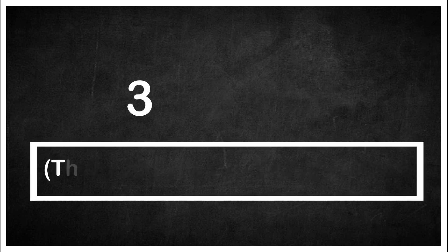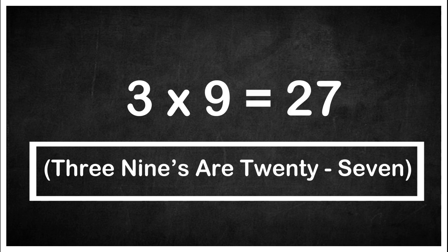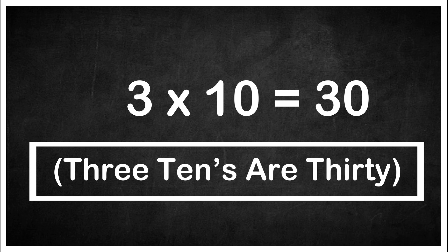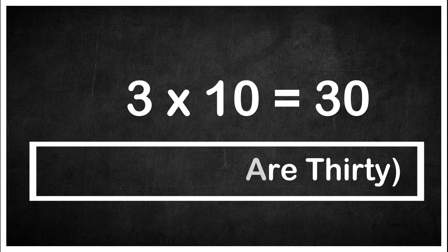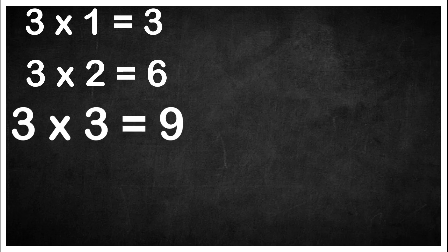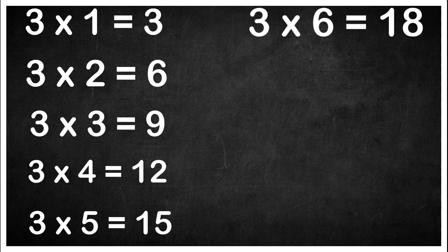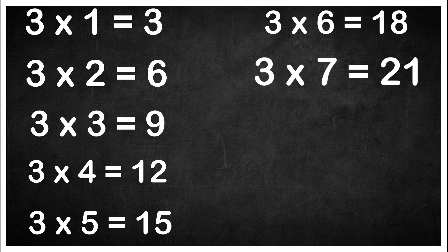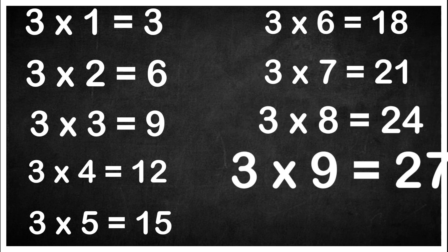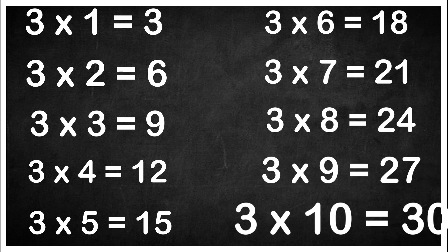Three nines are twenty-seven. Three tens are thirty. Three one is three. Three twos are six. Three threes are nine. Three fours are twelve. Three fives are fifteen. Three sixes are eighteen. Three sevens are twenty-one. Three eights are twenty-four. Three nines are twenty-seven. Three tens are thirty.